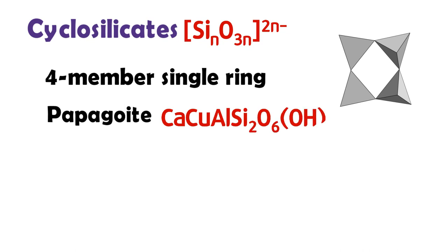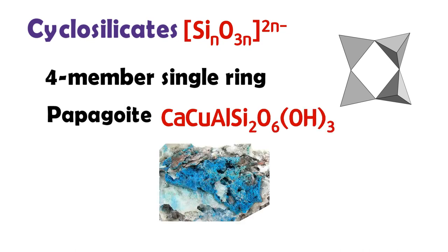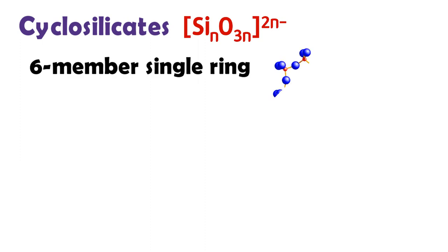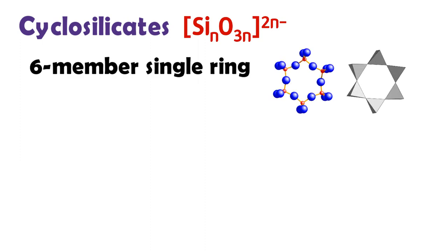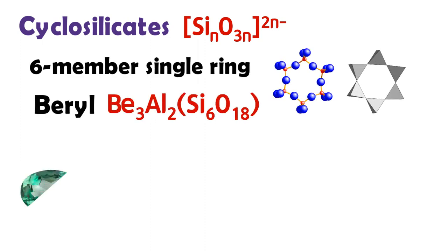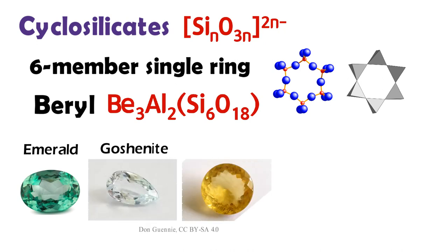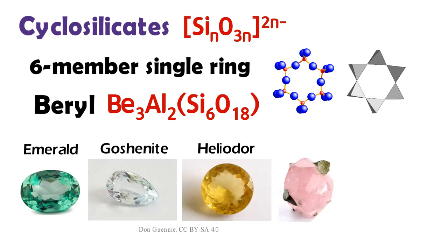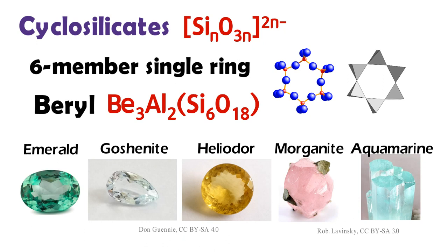Papagoite is a calcium copper silicate hydroxide. Beryl has a six-member single ring. Beryl is a gemstone composed of beryllium aluminum cyclosilicate, and it has various colors. They are emerald, goshenite, heliodor, morganite, and aquamarine.